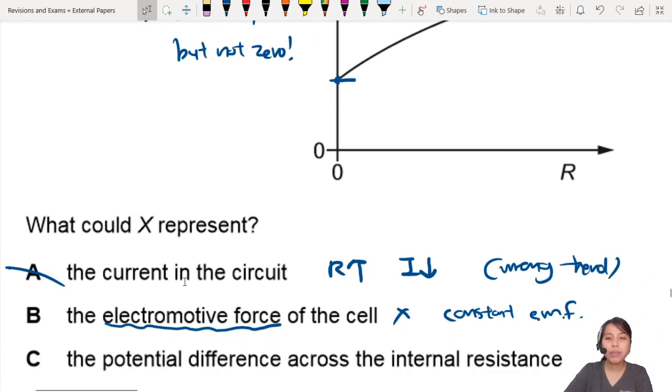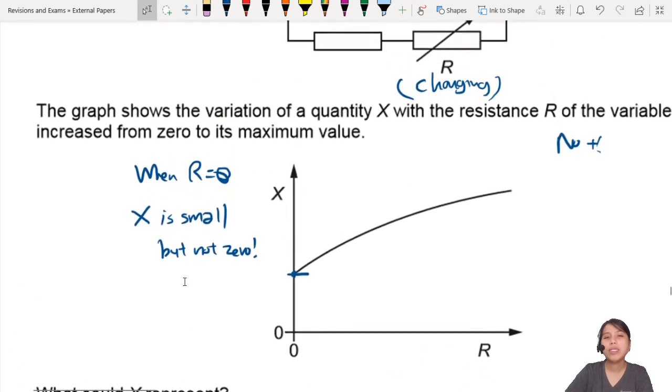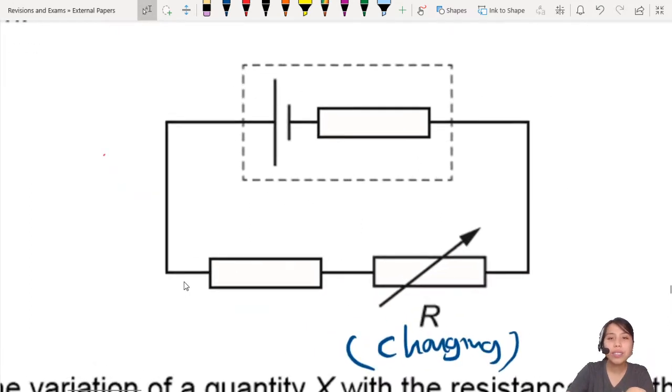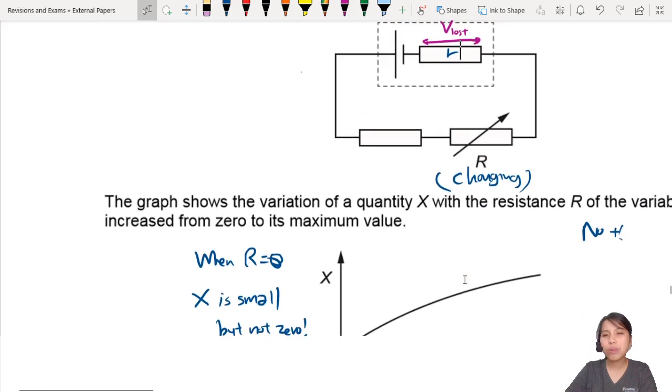What other choices do we have? Potential difference across internal resistance. What is the internal resistance? Don't forget you have an internal resistor here, R. Potential difference means it is another name for what we call the lost volts. How much energy is lost because of internal resistance? So, how does lost volts change with R?